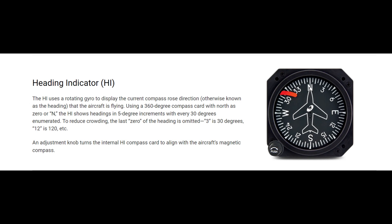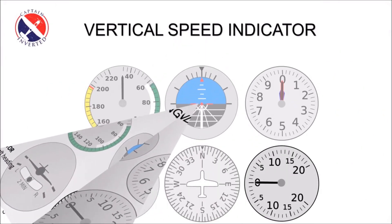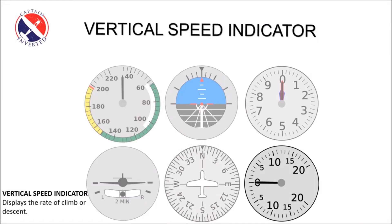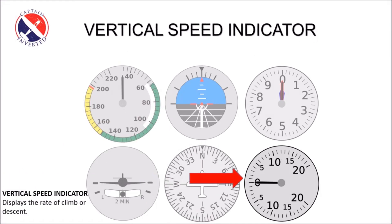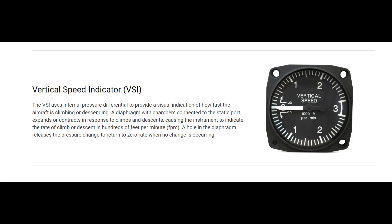The vertical speed indicator shows how fast the aircraft is climbing or descending. If you climb or descend, you can see the rate of speed on the indicator.